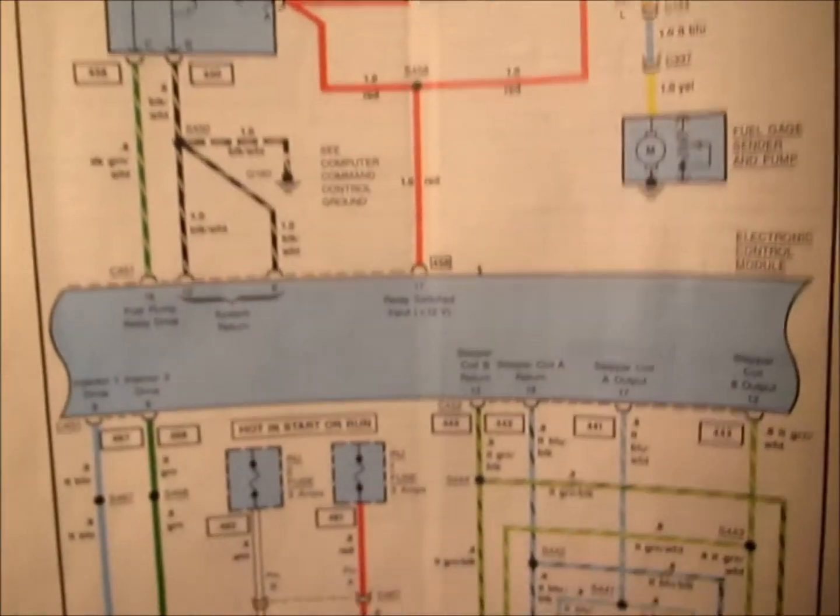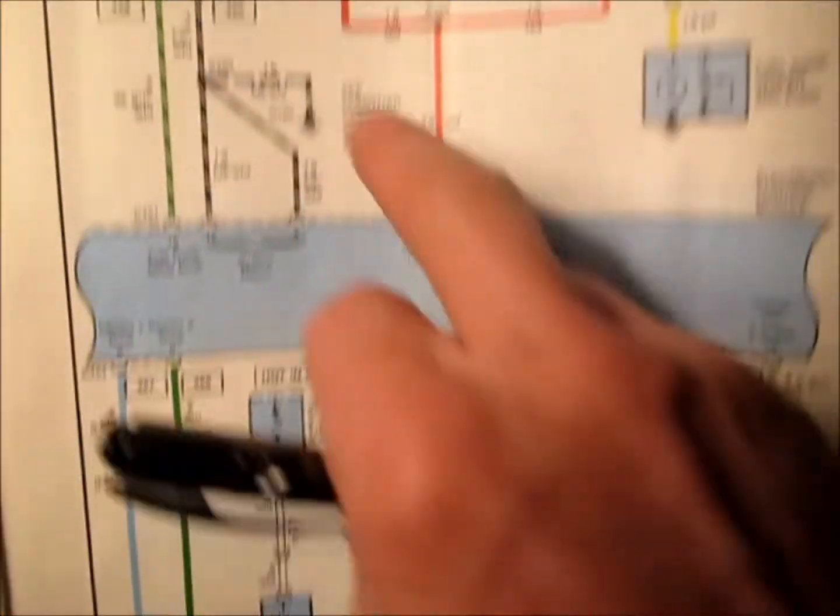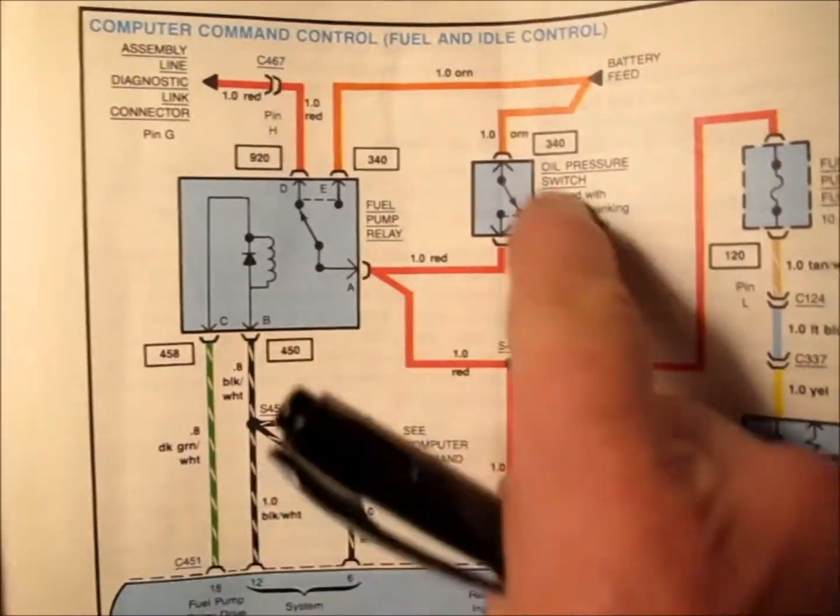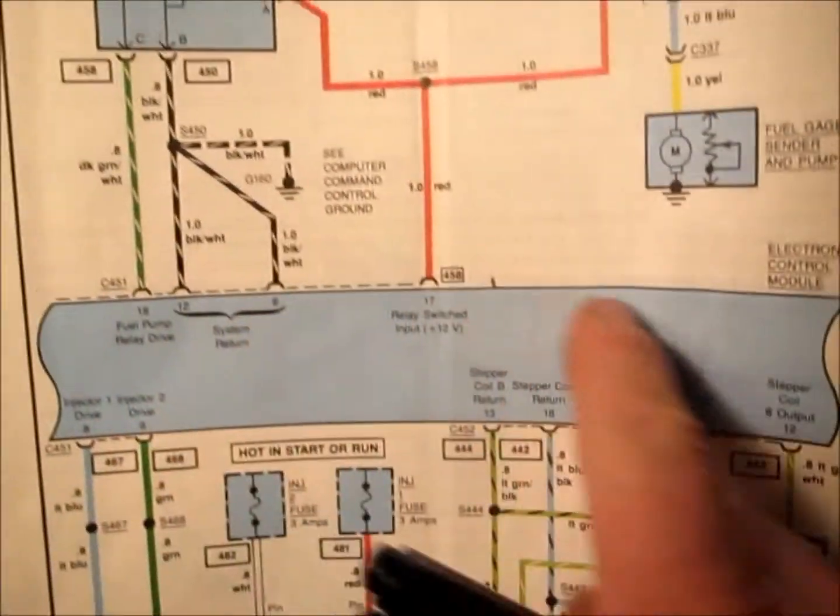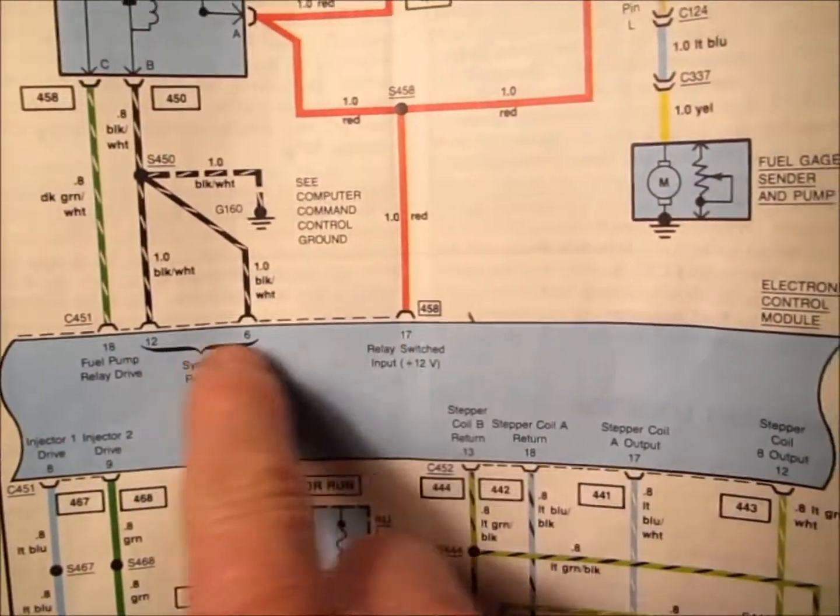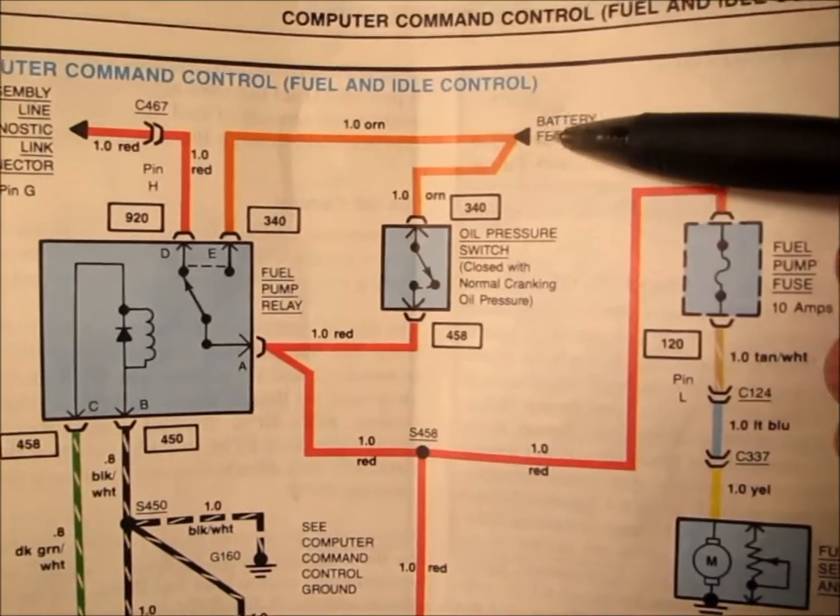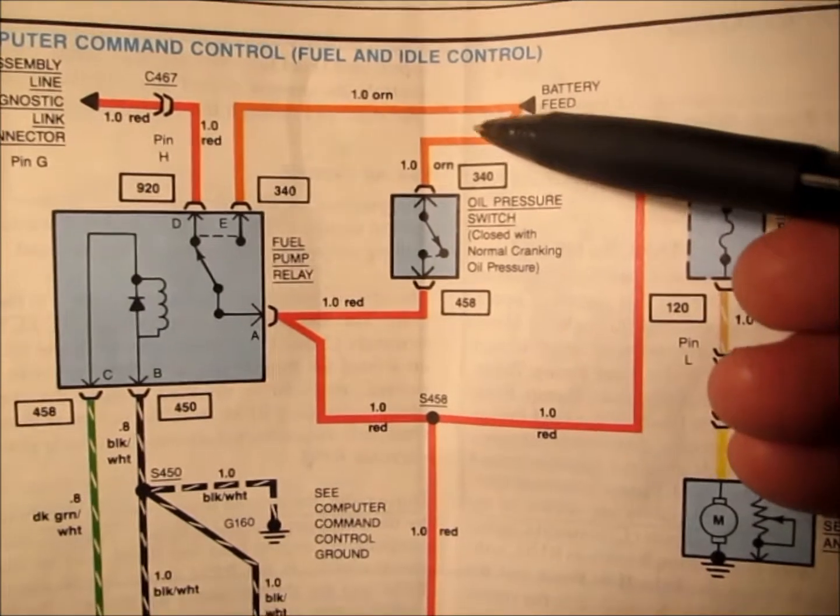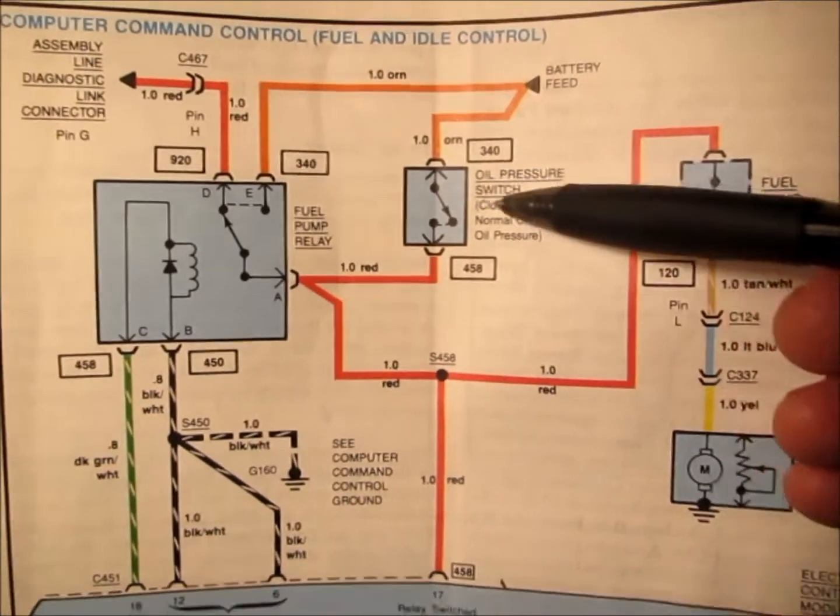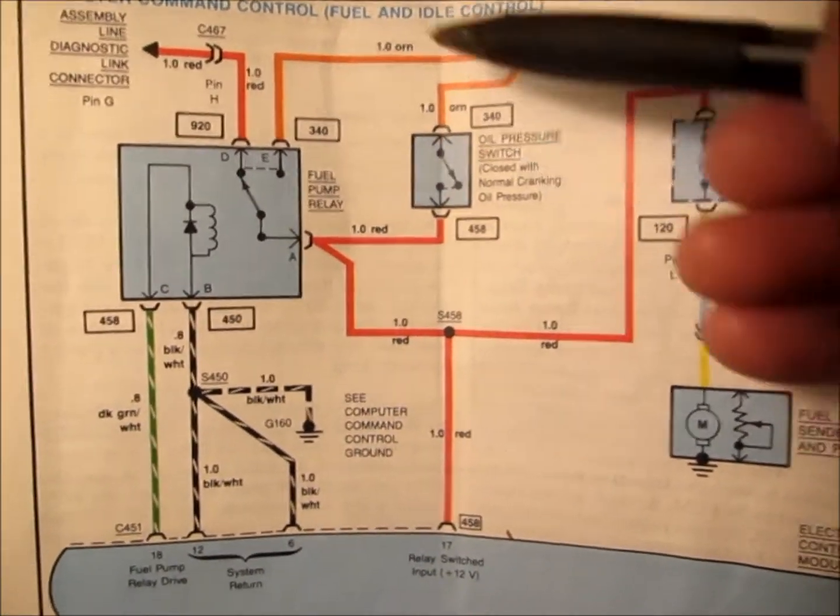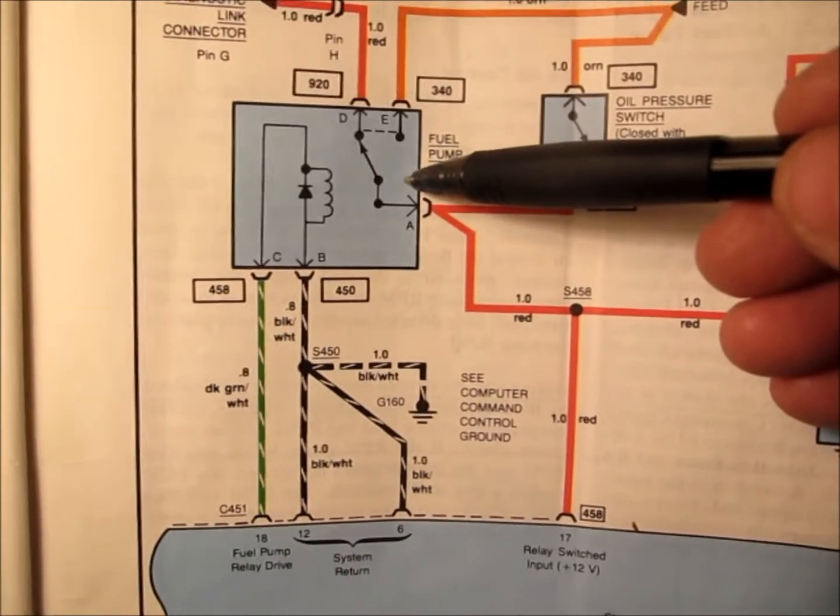Here's the electrical diagram for the fuel injectors, the fuel pump relay, the oil pressure switch, and how it goes through the electronic control module. Going off the battery, there's an orange wire that goes to the oil pressure switch and also goes to the fuel pump relay.